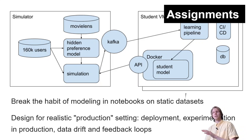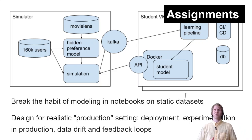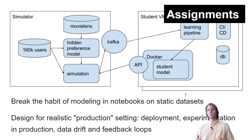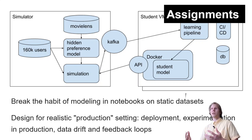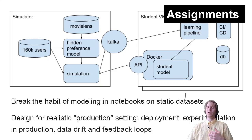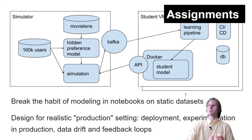Briefly, we want to get away from notebooks, static data sets, and just evaluating accuracy. This is reflected in our assignments. We built an infrastructure to simulate the real world where a million simulated users are watching movies and students provide a recommendation service. This way, the recommendations students make actually have an impact on the simulated real world, so we can detect feedback loops. They also need to run and operate the system in production — we look at availability, and they need to update it with little downtime — creating realism in terms of actually building a system.